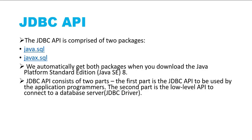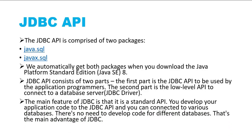For example, if you want your application to connect to MySQL Server, you need to configure the MySQL JDBC driver. If you want to connect to Postgres or Oracle, you configure a JDBC driver for that specific database. The JDBC driver provides the implementation for the JDBC API — the API exposes the interfaces but does not provide any implementation itself.